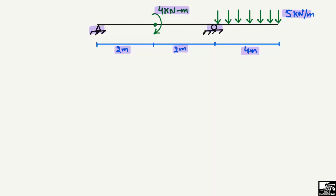There are two supports: a hinge support and a roller support. Let's call them support A and support B. Both can take vertical reactions, but the horizontal reaction at the hinge support is equal to zero because there is no horizontal load acting on the beam.